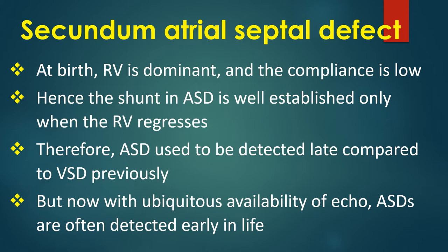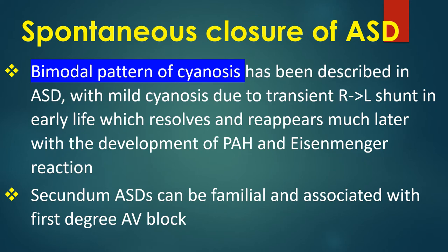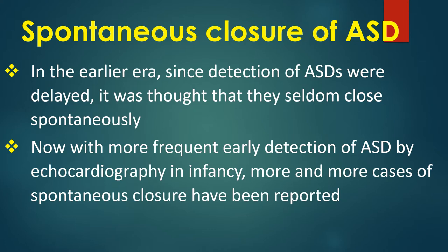Now, with ubiquitous availability of echocardiography, ASDs are often detected early in life. A bimodal pattern of cyanosis has been described in ASD — mild cyanosis due to a transiently hypertrophied right ventricle in early life, which resolves and reappears later with the development of pulmonary hypertension and Eisenmenger reaction. Secundum ASDs can be familial and associated with first degree AV block. In the earlier era, since detection of ASDs was delayed, it was thought they seldom close spontaneously. Now, with more frequent early detection by echocardiography in infancy, more cases of spontaneous closure have been reported.